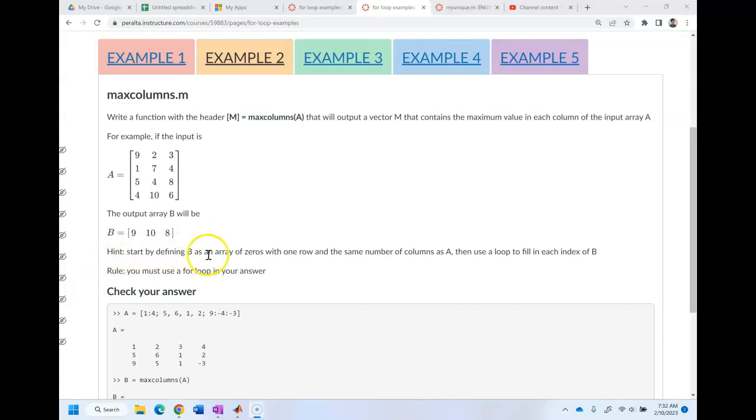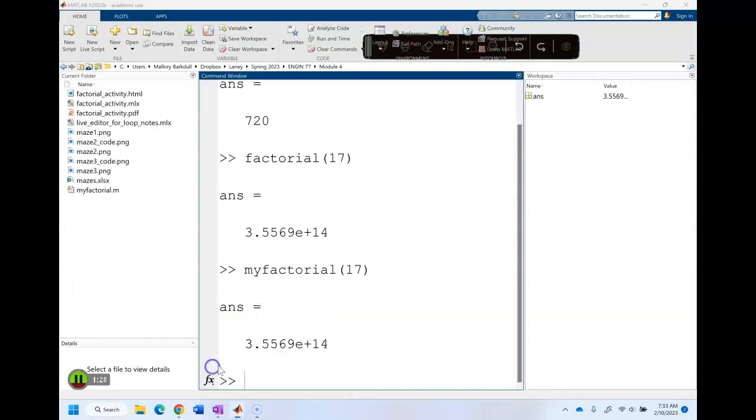My hint here is start by defining B as an array of zeros with one row and the same number of columns of A, then use a loop to fill in each index of B. So let's head to MATLAB to start that.